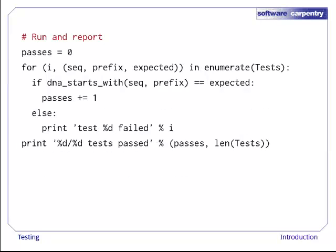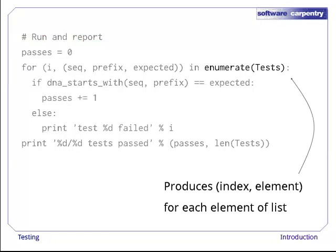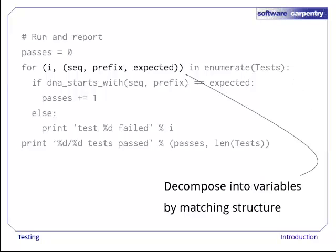This slightly modified version of our code solves that problem. The built-in function enumerate takes a list or any other sequence as an argument and produces one pair for each entry in that list. The first half of each pair is an element index, and the second is the list element itself.